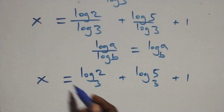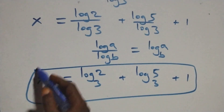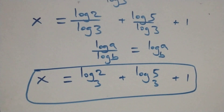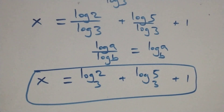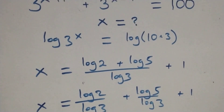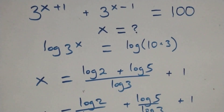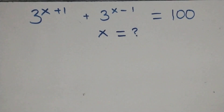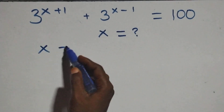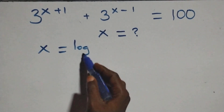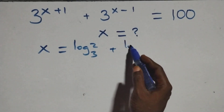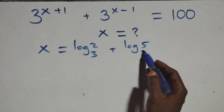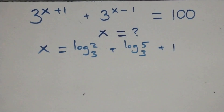Then what we have here becomes x equals to log 2 base 3 plus log 5 base 3 plus 1. At this, the value of x is log 2 base 3 plus log 5 base 3 plus 1. Then let's check here if it satisfies the given problem — we will substitute the value of x, which is log 2 base 3 plus log 5 base 3 plus 1.